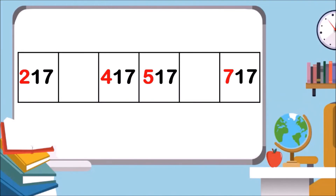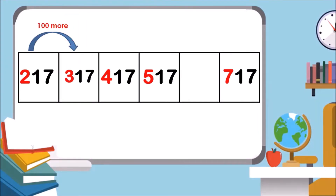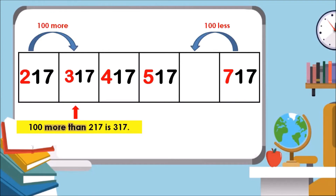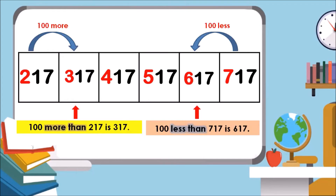Let us use the number tape to find the missing numbers. First, observe the digits in the hundreds place. What is 100 more than 217? 100 more than 217 is 317. What is 100 less than 717? 100 less than 717 is 617.